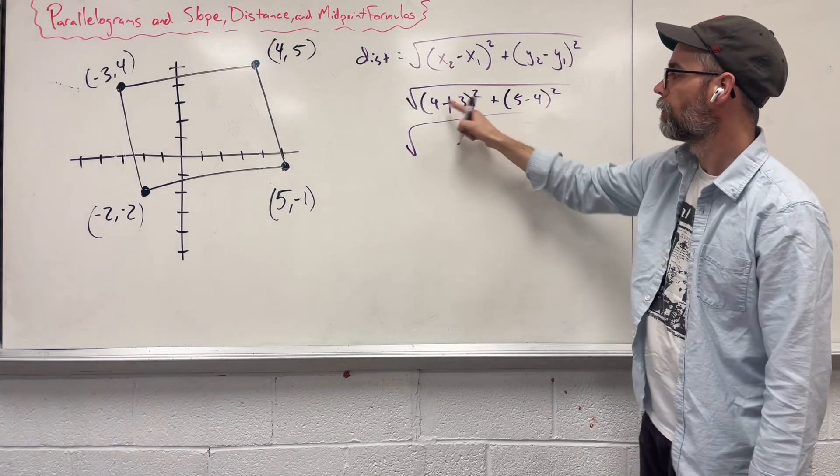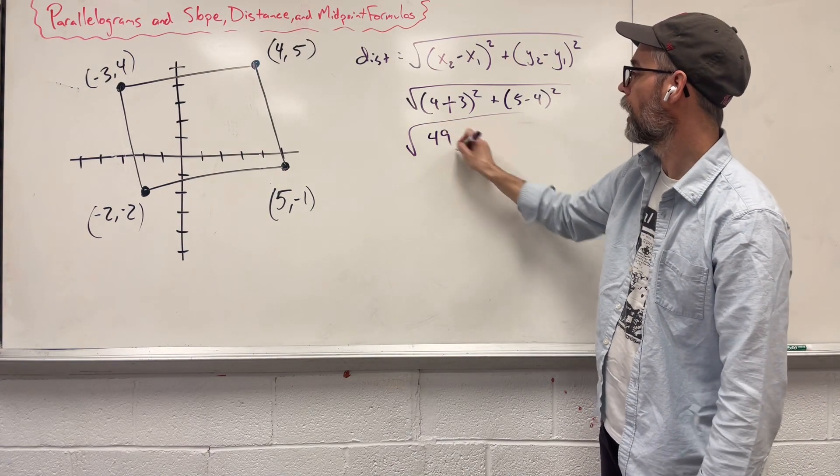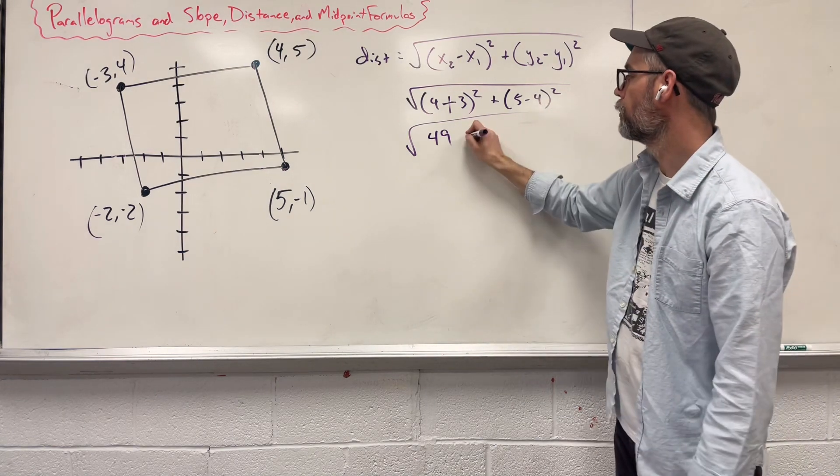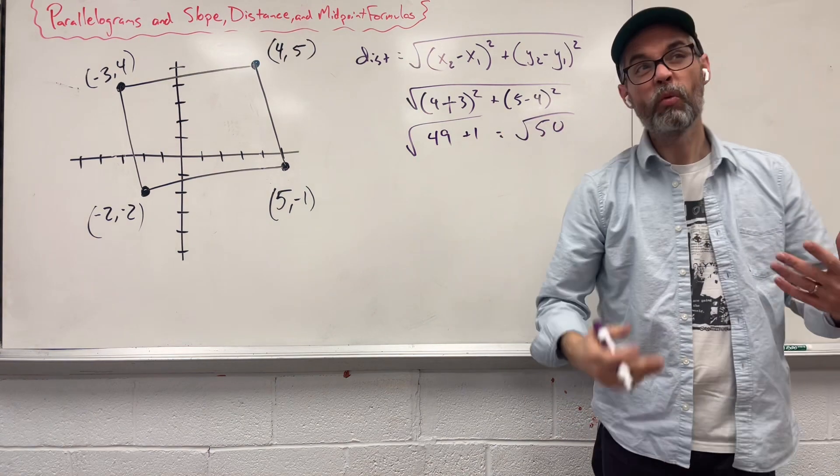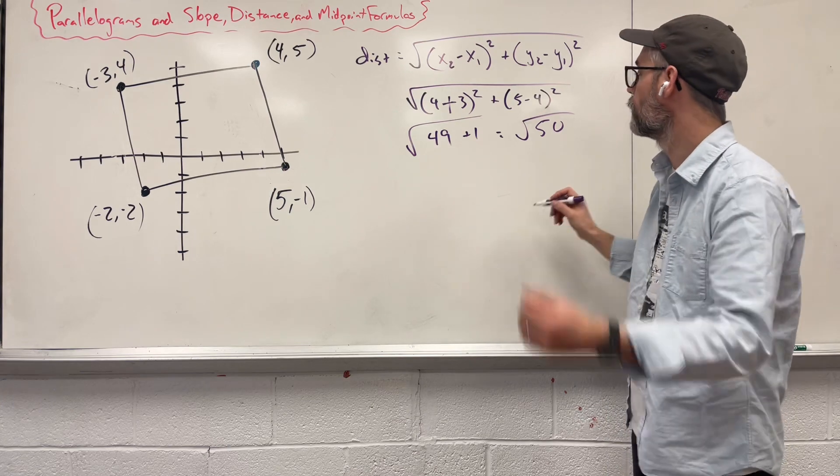And then let's simplify a little, that's a plus, 4 plus 3 gives us 7, square that, we get 49. 5 minus 4 is 1, square it, you get 1, and then square root of 50. We could simplify it, but who cares, it doesn't really even matter, we don't need to go further.